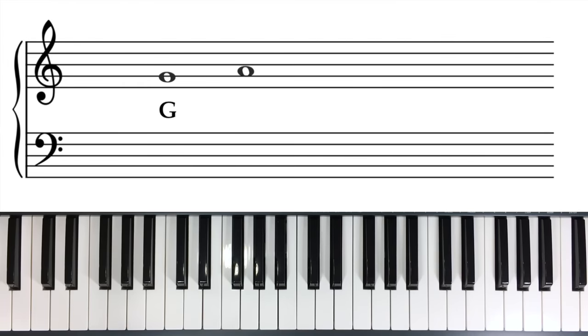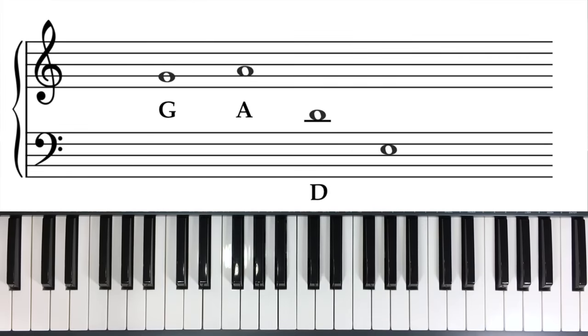Now that we've memorized these landmarks, figuring out the notes around them is easy. If this is G, what is this note? Well it's right above G, right? So right above G is A. And this note here, what would that be? Well it's right above middle C, so it's D. And this note here, it's below F, so it's E.